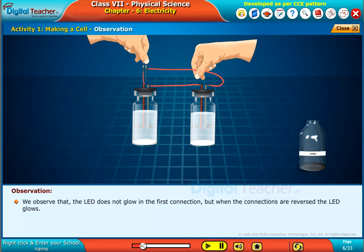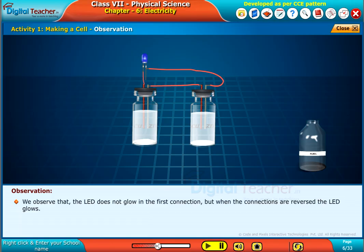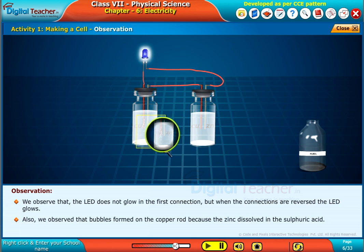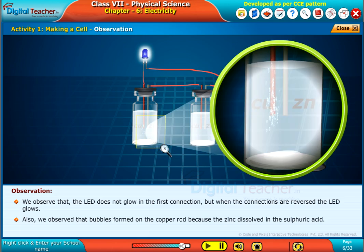We observed that the LED does not glow in the first connection. But when the connections are reversed, the LED glows. Also, we observed that bubbles formed on the copper rod because the zinc dissolved in the sulfuric acid.